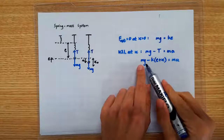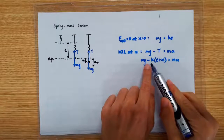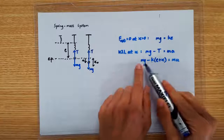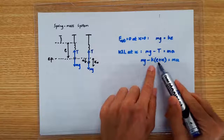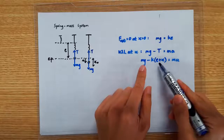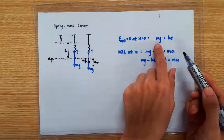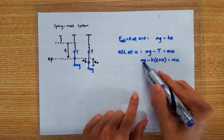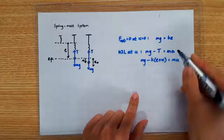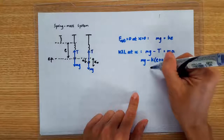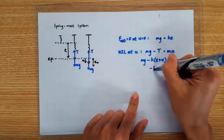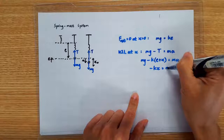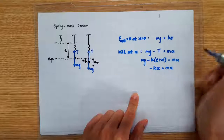Now look at mg minus kE. mg minus kE is zero, because we know from the equilibrium condition that mg equals k times E. So mg minus kE is zero, leaving us with simply negative kx equals m times A.